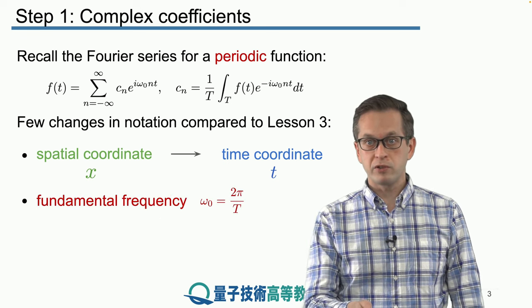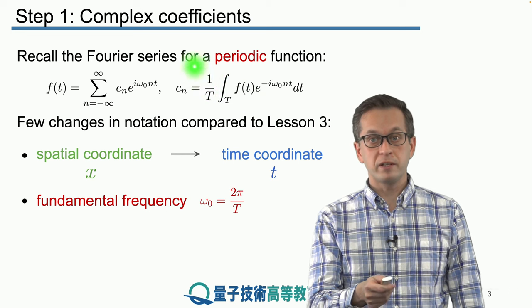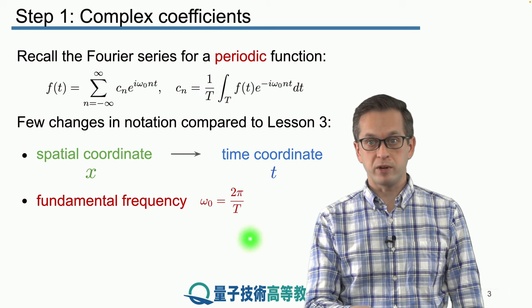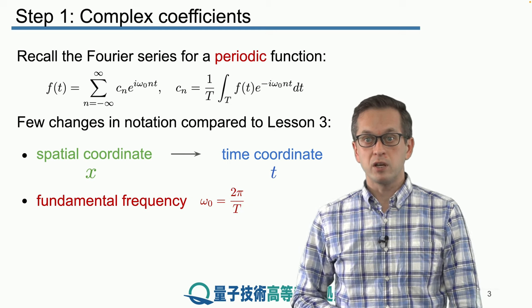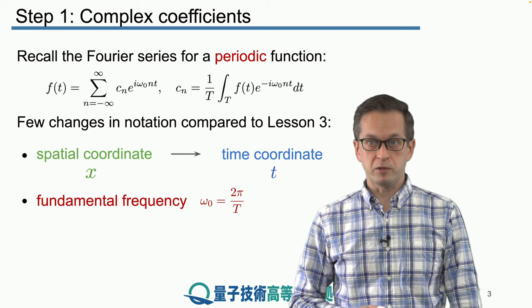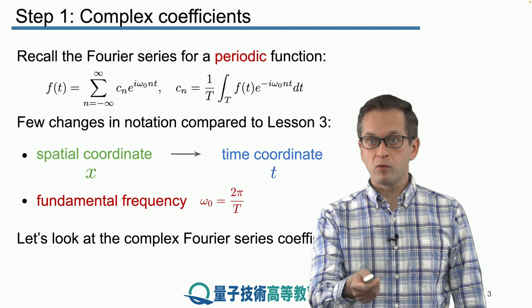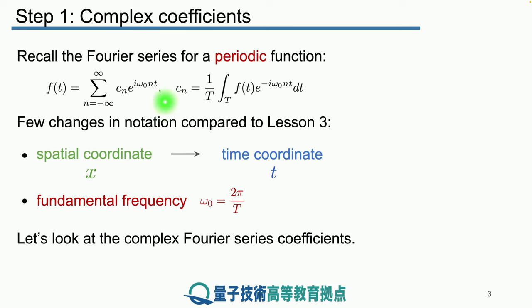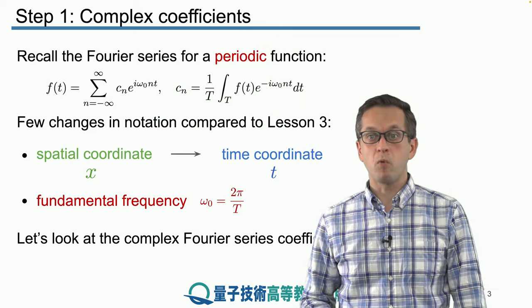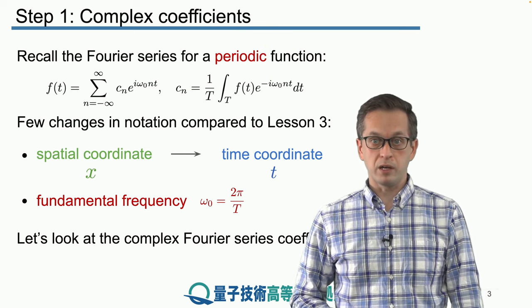And also we introduced this notation omega 0, which is the fundamental frequency given by this following expression. Omega 0 is just 2π divided by the period of the function. And in this step in particular, we will be looking at these coefficients right here. We know that they can be complex and we would like to know when and how do they become complex.